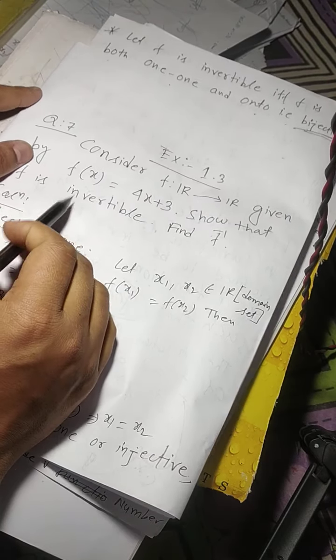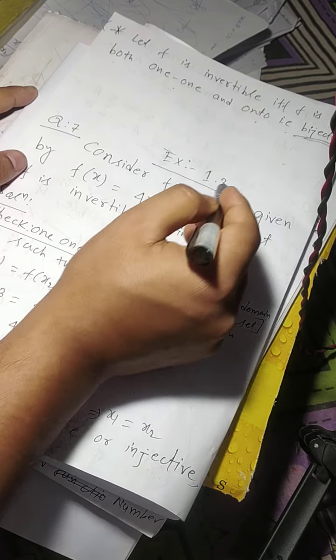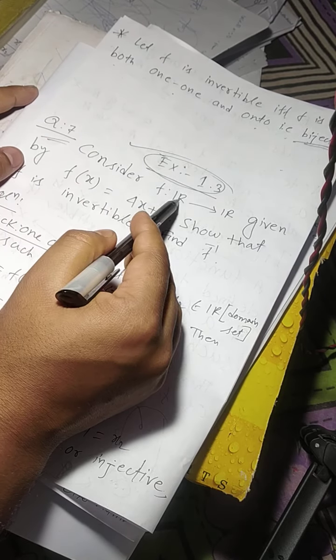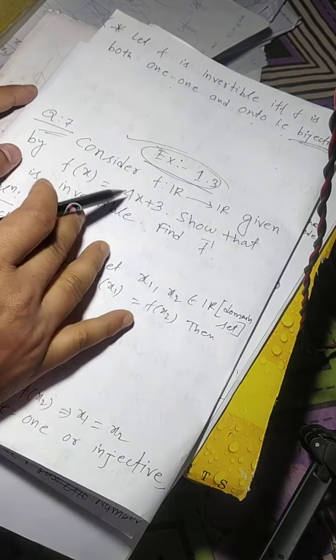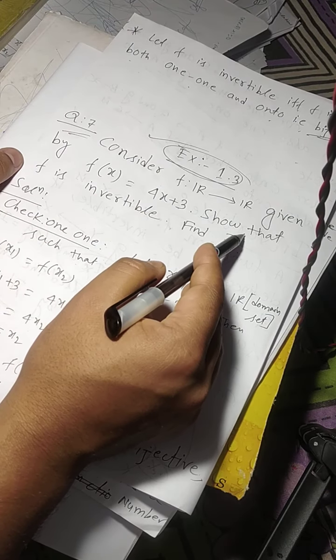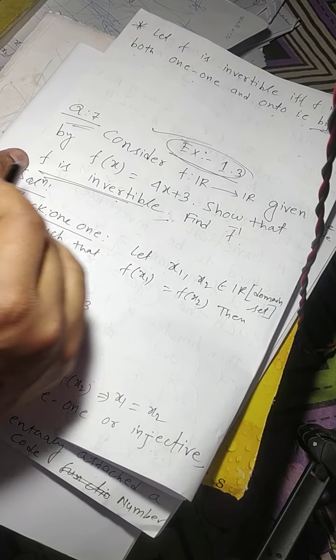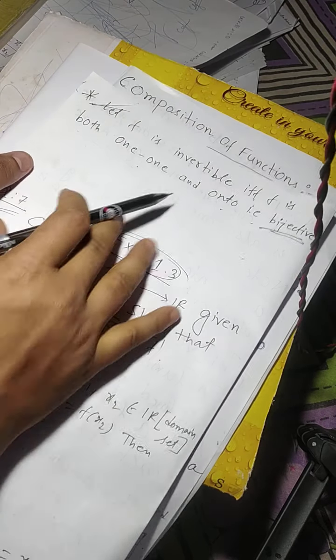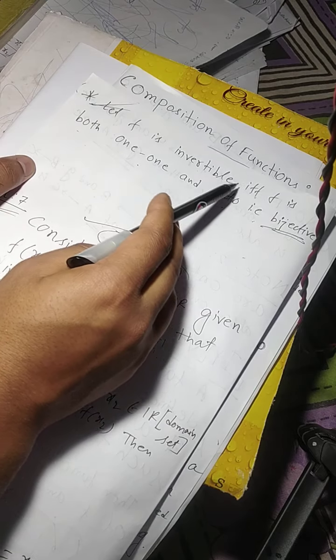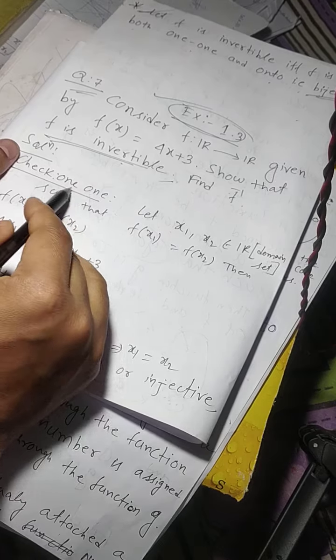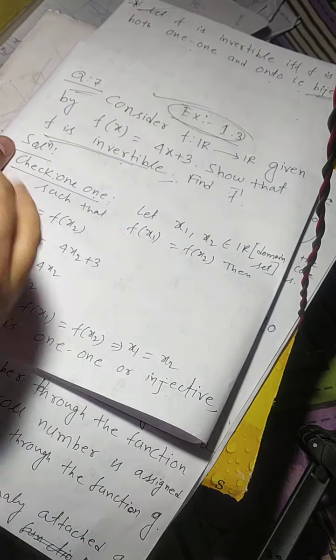Now I am giving an example. Consider exercise 1.3 from the textbook, question number seven. Consider f from real numbers to real numbers given by f of x equals 4x plus 3. Show that f is invertible and find f inverse. To prove invertibility, f is invertible if and only if f is both one-one and onto, that is bijective. So first check one-one, that means injective.